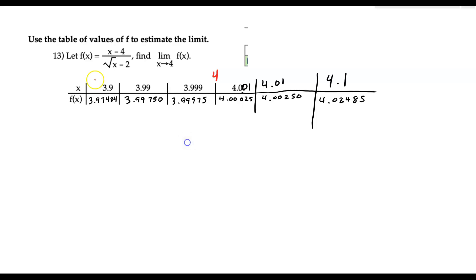What we're doing is look at what's going on. We're getting closer and closer to 4 on the number line from the left and from the right. What seems to be going on as we move in this way?